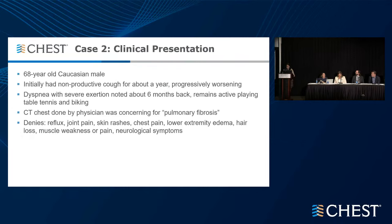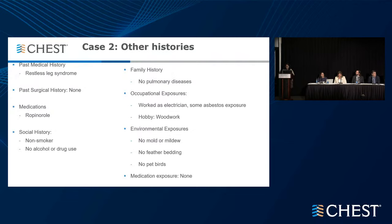Moving on to case two: a 68-year-old Caucasian male who initially had non-productive cough for about a year, progressively worsened, and has dyspnea with severe exertion noted about six months ago. Still remains fairly active playing table tennis and biking. A CT chest by his physician was concerning for pulmonary fibrosis and he was referred to our ILD center. He denied reflux symptoms, joint pain, skin rashes, or symptoms supportive of autoimmune condition. History of restless leg syndrome, on medication for that, never smoker, no alcohol or drug use, no family history of pulmonary disease. Did work as an electrician with some asbestos exposure, does woodwork as a hobby, no mold or mildew, no feather bedding, no pet birds.